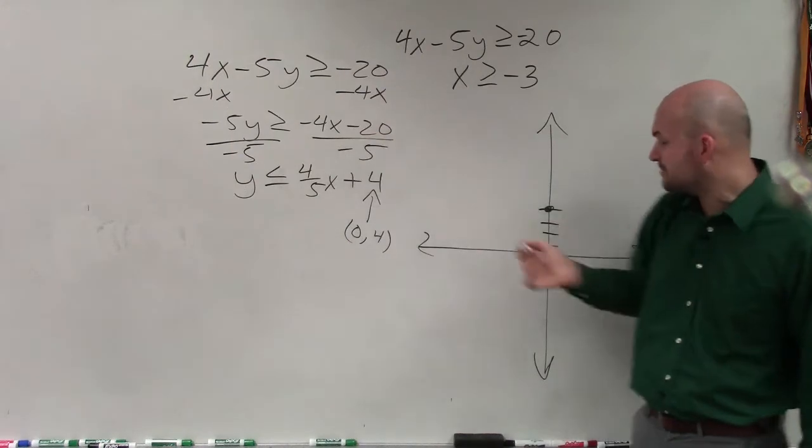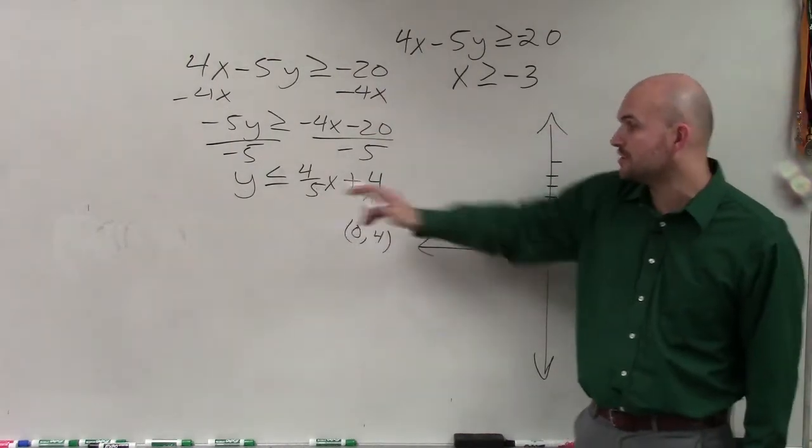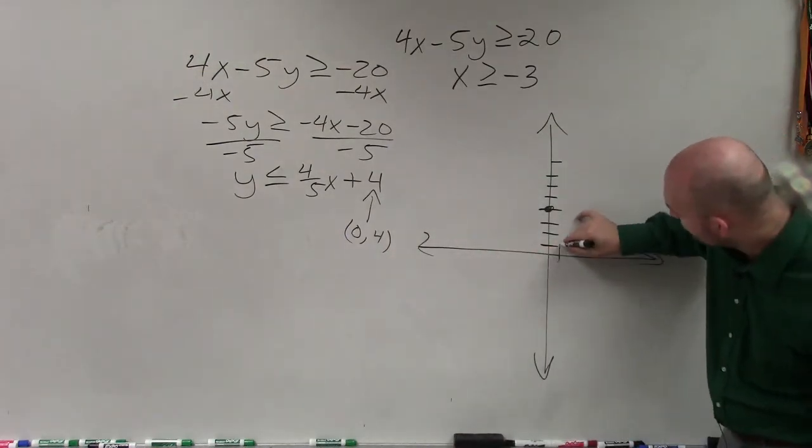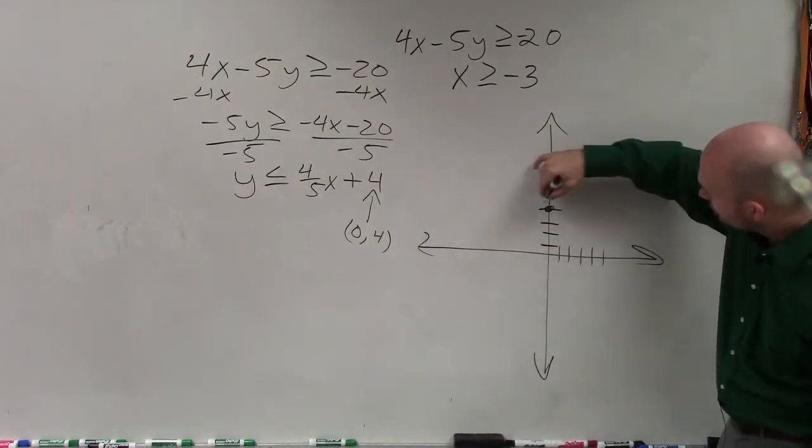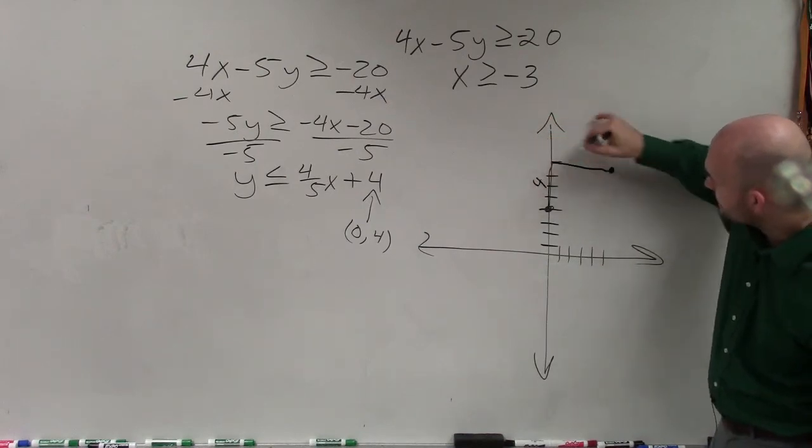The change in the y-coordinates is positive 4, so I go up 4, 1, 2, 3, 4. And my change in my x-coordinates is 5, so I go over 5, 1, 2, 3, 4, 5. Remember, you're going up 4 over 5 from your y-axis.